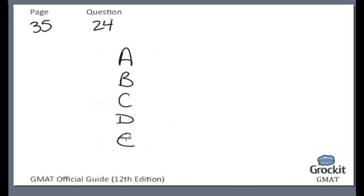Choice A is one of those things that could be true but is not necessarily true — it's not a must-be-true based on what the passage says. All the passage says is that in Summer County they have the highest percentage with an annual income of $60,000 or more. In fact, they could all have $60,000, and that would still be true relative to the terms of the passage. So basically choice A cannot possibly be right — it's a might-be-true, not a must-be-true.